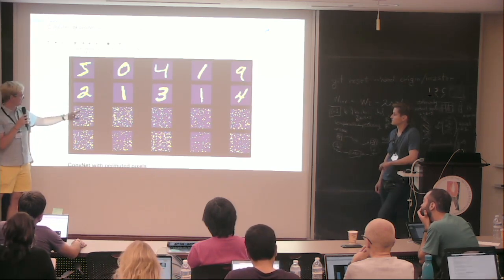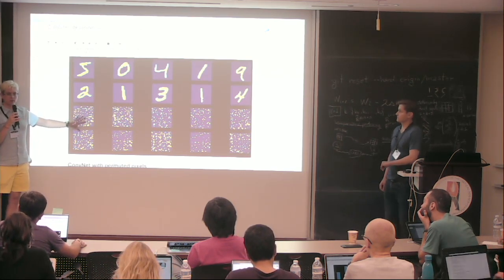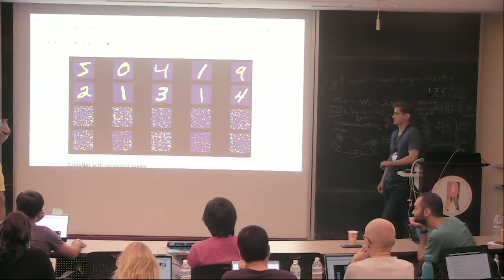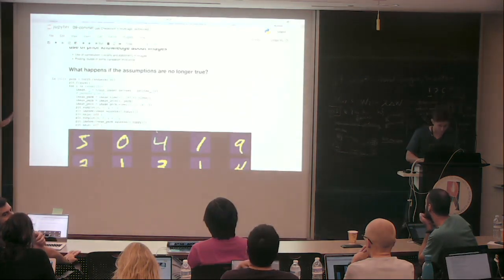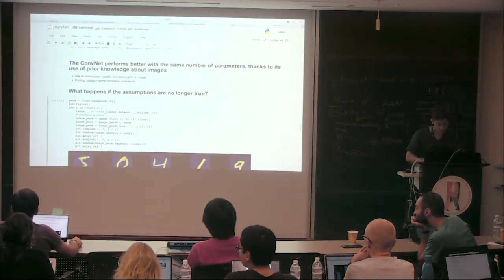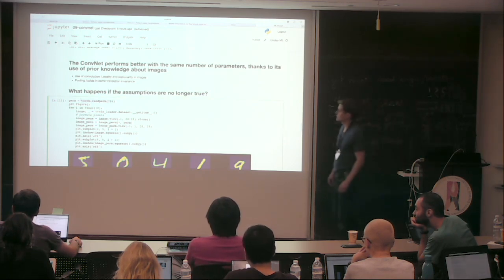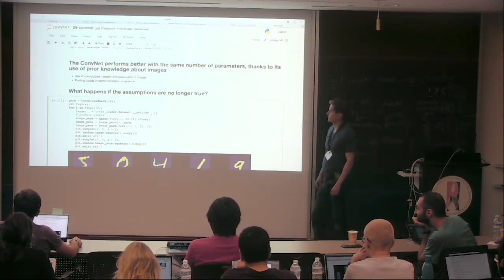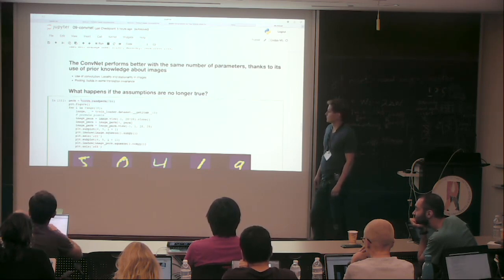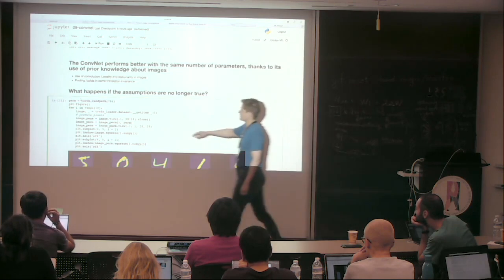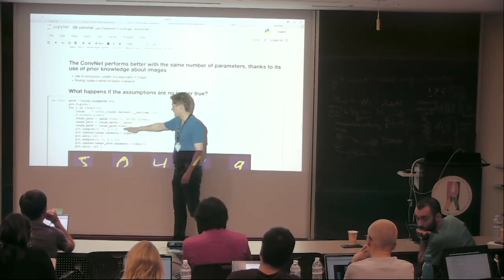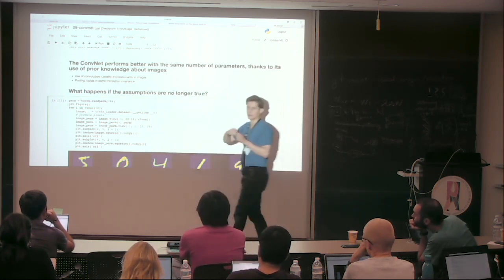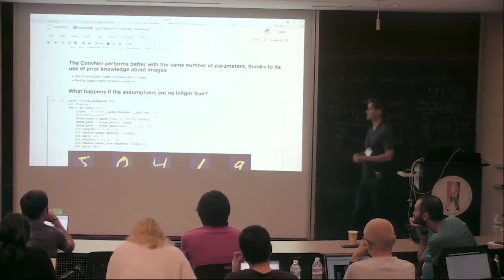The scrambling is a deterministic function: every time it applies the same permutation with a fixed random seed. Before permuting, we flatten the image, permute the pixels, and put it back to 2D. So yes, to test a new image, you would need to apply the same scrambling transformation to it first.